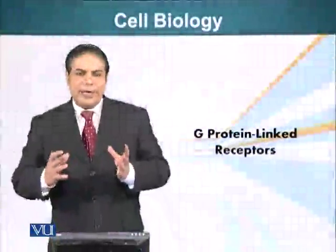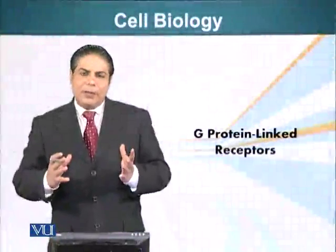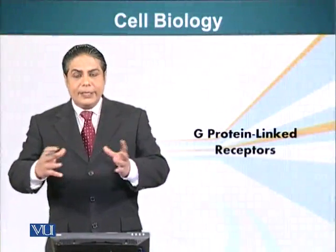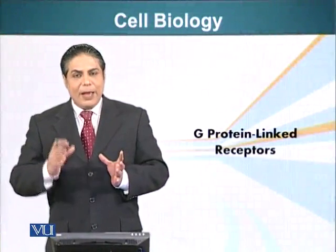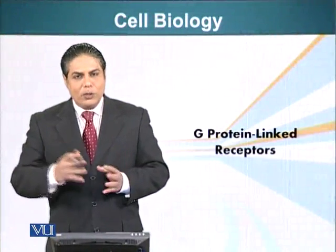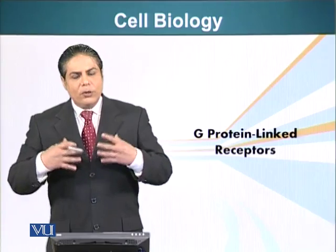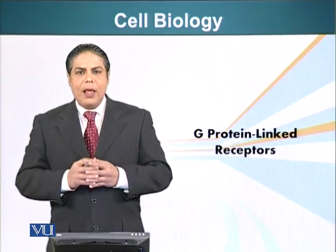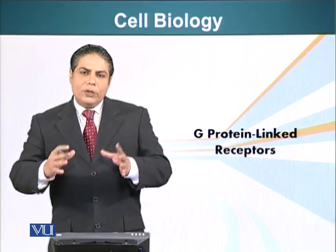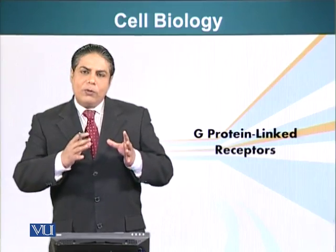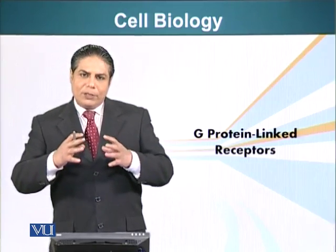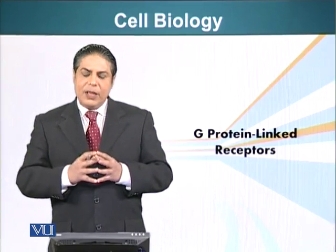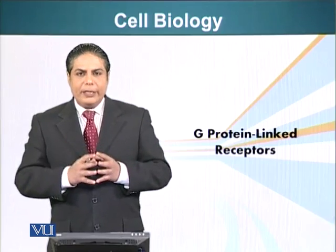We have seen an example of a simple bacteria, how it senses its external environment and how it responds to it. Now, let's move on to a more complex system - the eukaryotic system. We are going to look first at the example of a specific type of signaling system that involves G proteins.